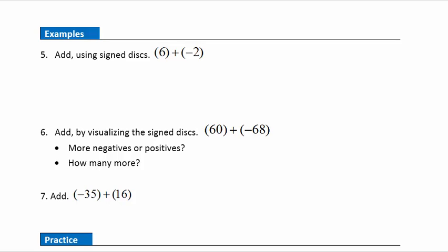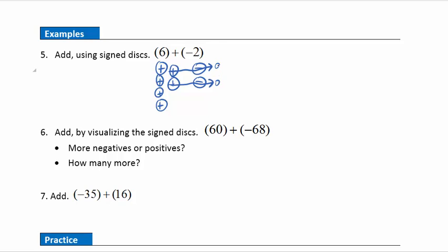Now let's look at some examples of adding positive and negative integers. Example five: add using signed disks. There are six positives plus two negatives. This positive and that negative zero out, and this positive and this negative zero out, leaving four positives. So the answer is positive four.